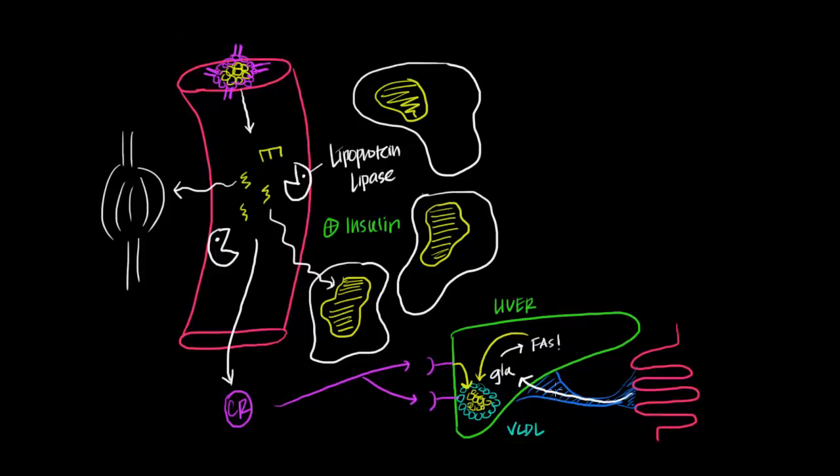Ultimately, just like the chylomicron left the small intestine and traveled all the way to the capillary beds so that the lipoprotein lipase could release the fatty acids, the VLDL molecule has a very similar fate. I'm just going to put an asterisk here by this capillary bed to remind you that the VLDL, once it reaches the capillary bed, can be acted upon by the lipoprotein lipase again. In addition, it also releases cholesterol to cells, but that's something that we won't cover in this video.